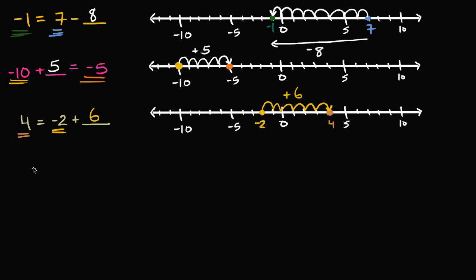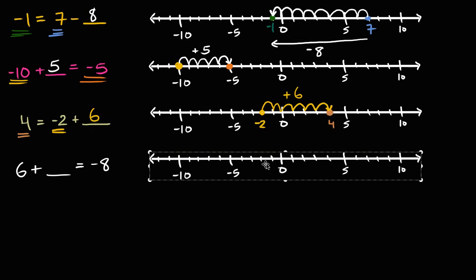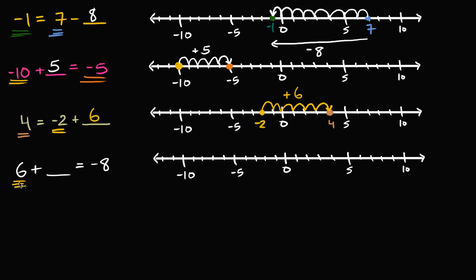This is fascinating — let's just do several more of these. All right, let's say we wanted to figure out: six plus blank is equal to negative eight. Try to pause the video and figure out what this blank is going to be. Let me throw my number line back here. I am starting at six, and I'm going to add something to get to negative eight — right over here at negative eight.